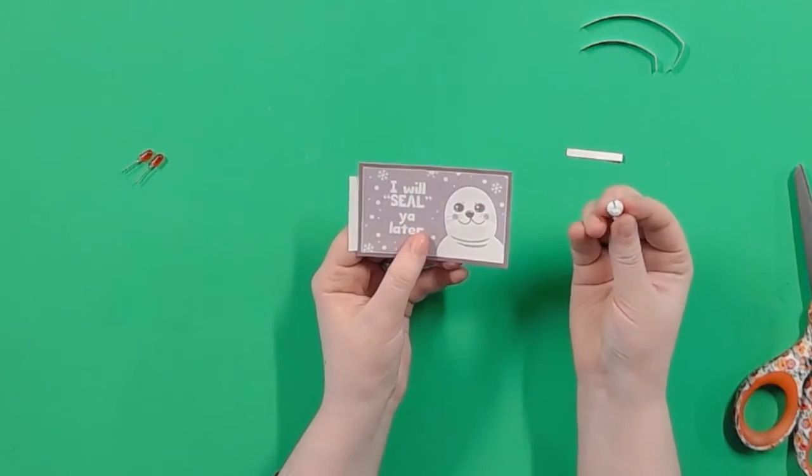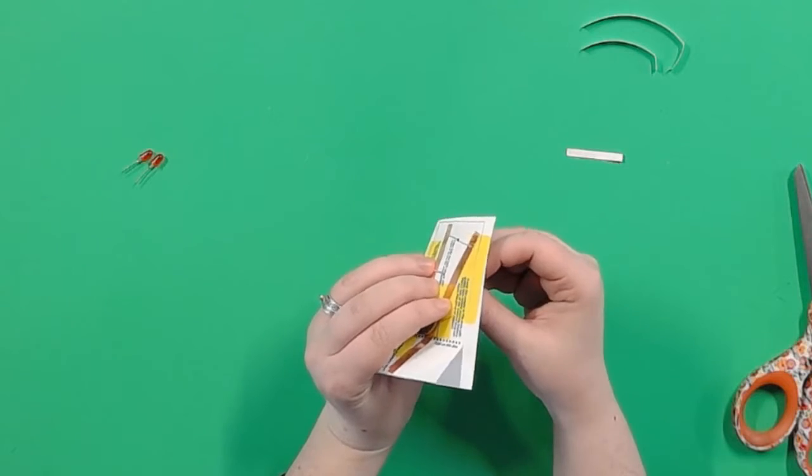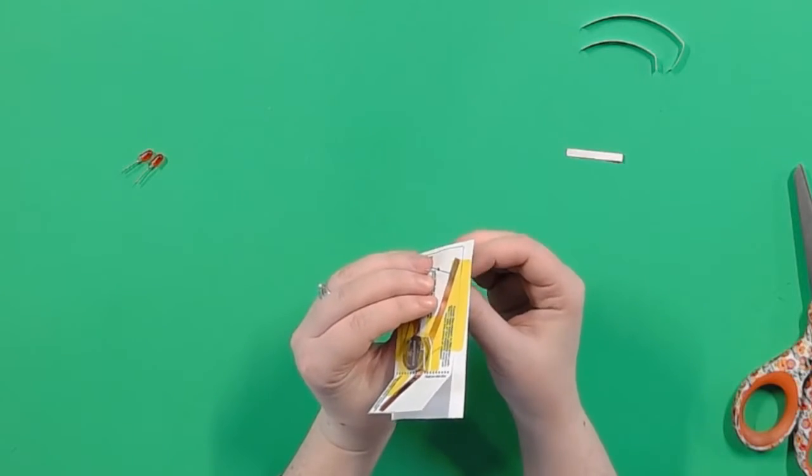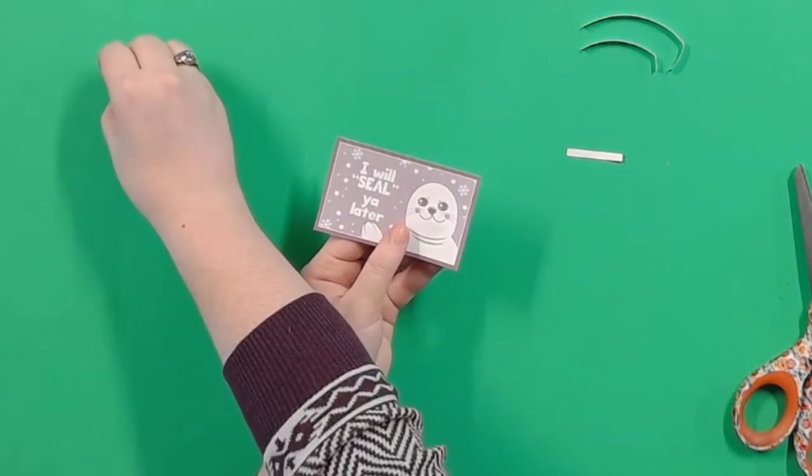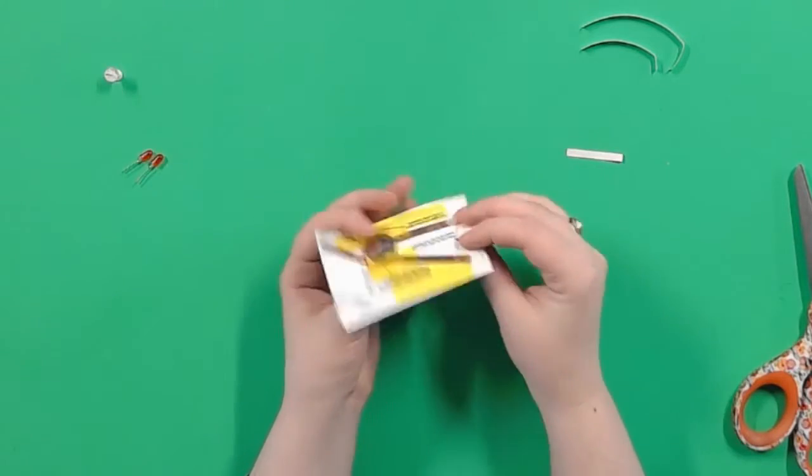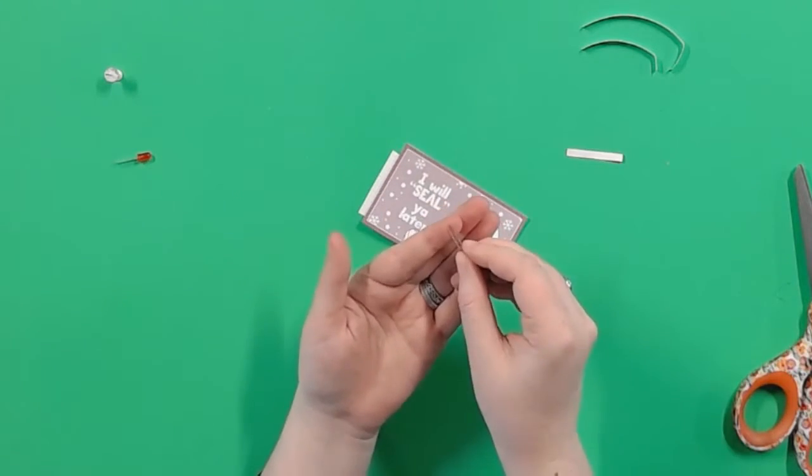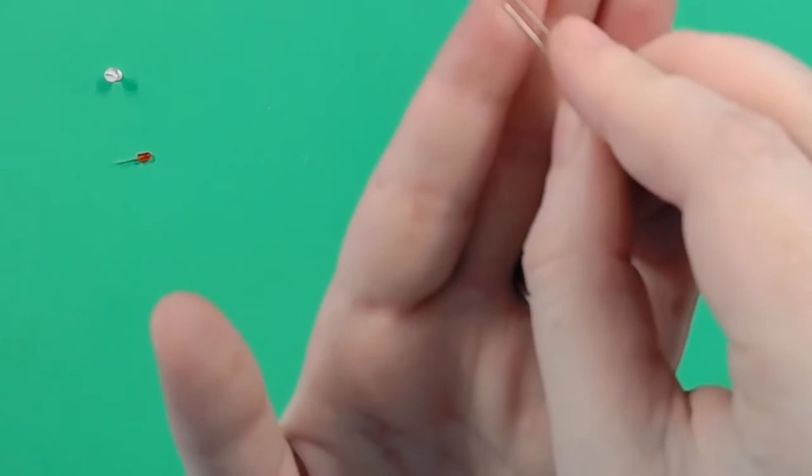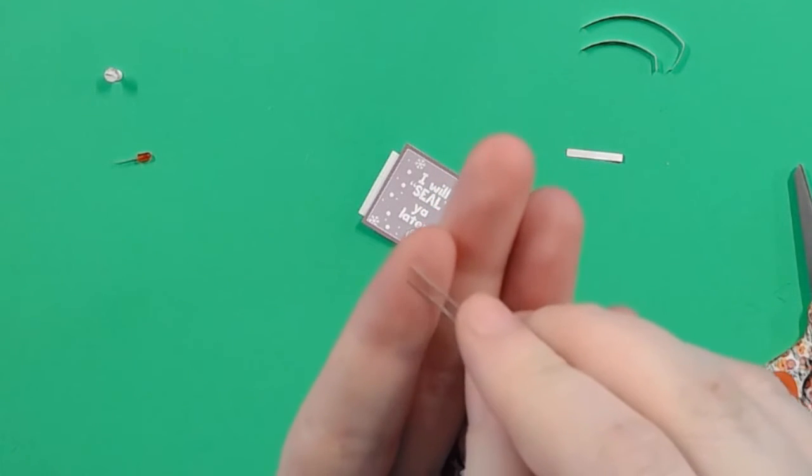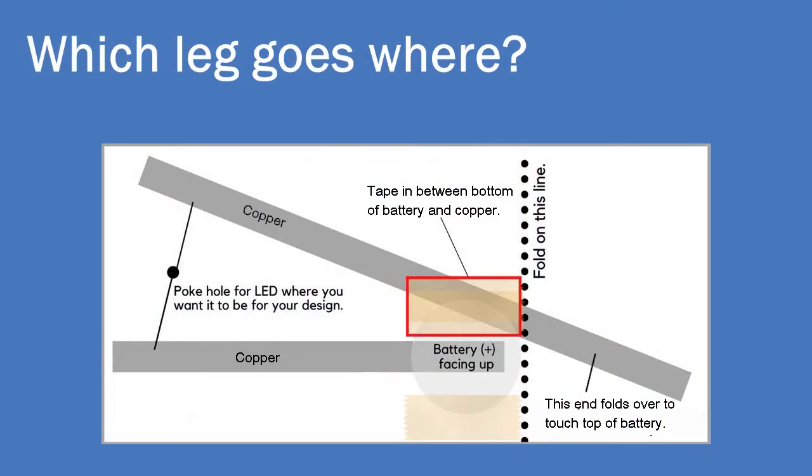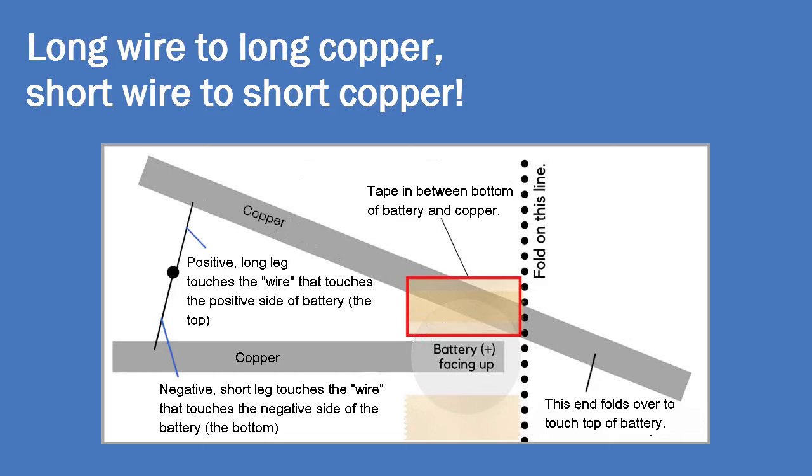First, grab your hole poker again and stick it through the same holes you made in the card, so that now you also poke holes through the template. Now you can grab one of your LED lights. Do you see how one leg is longer than the other? The long leg is the positive end and the short leg is the negative end. Can you guess which leg touches which copper strip based on which copper strip touched which part of the battery? That's right! Long to long and short to short. We made it simple for you.